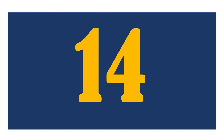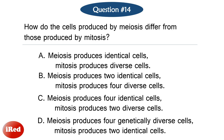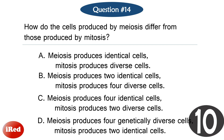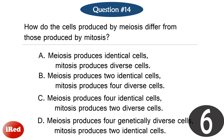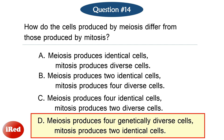Question number fourteen. How do the cells produced by meiosis differ from those produced by mitosis? The answer is D: meiosis produces four genetically diverse cells, while mitosis produces two identical cells.